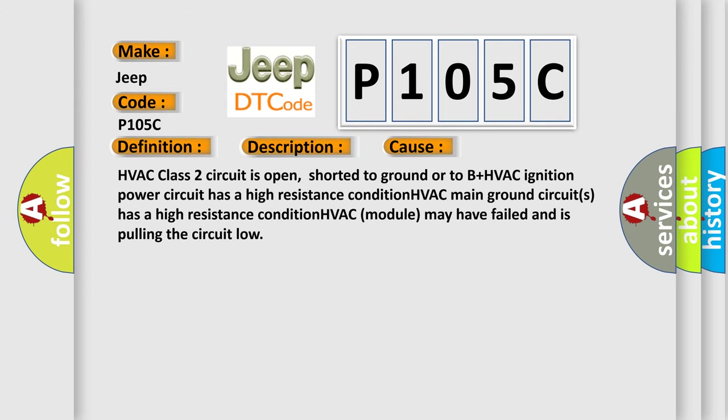HVAC class 2 circuit is open, shorted to ground or to B plus. HVAC ignition power circuit has a high resistance condition. HVAC main ground circuits has a high resistance condition. HVAC module may have failed and is pulling the circuit low.